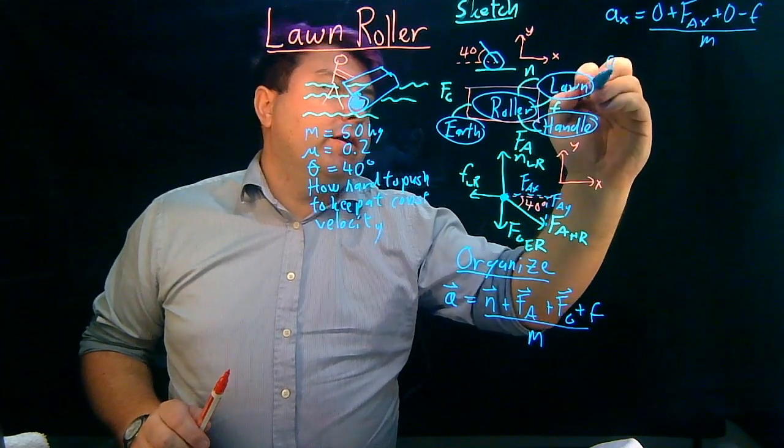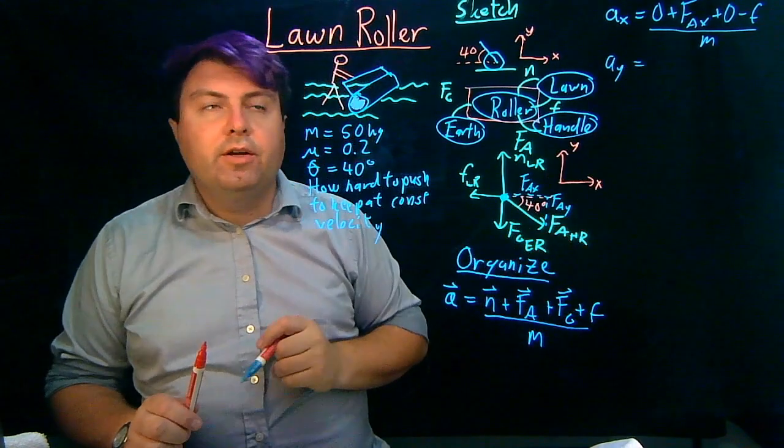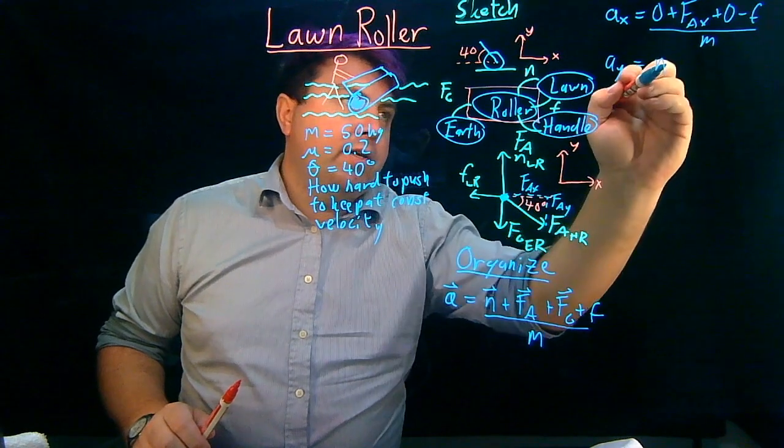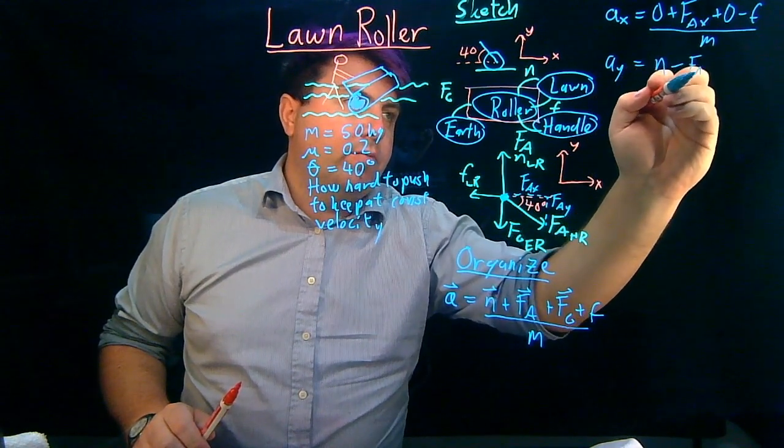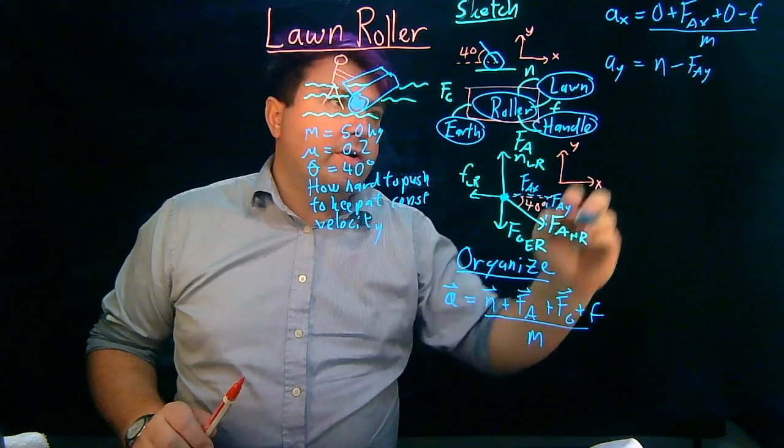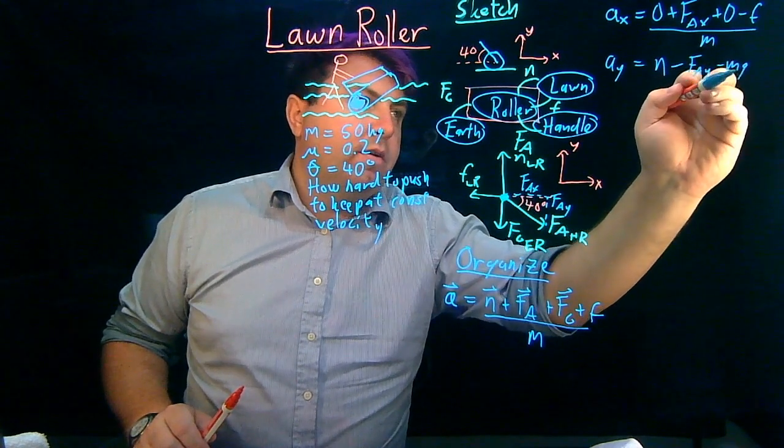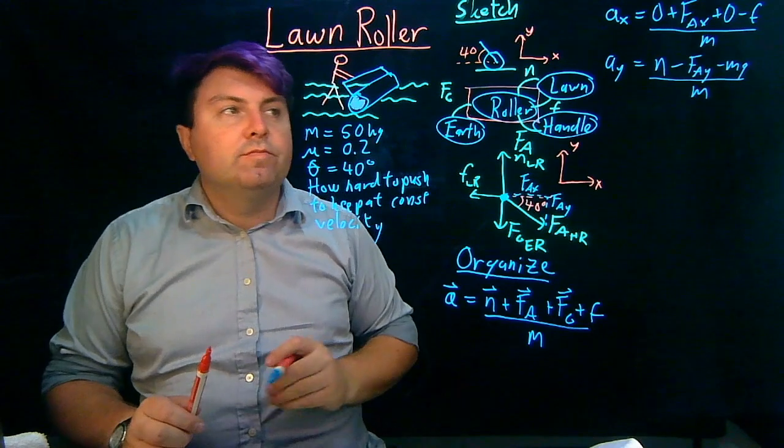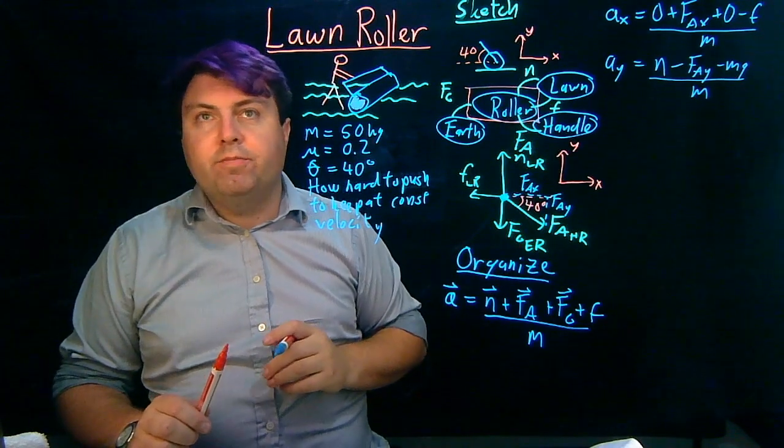In the y direction, we have normal now is positive, force applied is negative and has a component in the y, force of gravity is negative, and friction is zero. We don't even have to write it if we don't want to. So that's how we do our decomposing of forces.